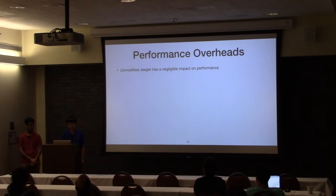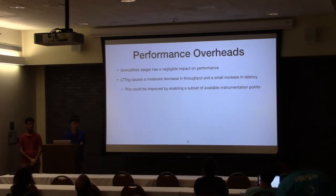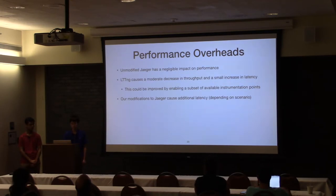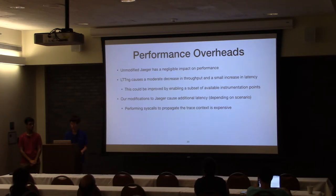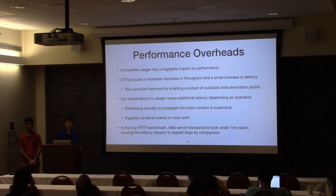So we discussed our performance overhead. Unmodified Jaeger is negligible. LTTNG decreases throughput and increases latency since it's recording all of that data. We could improve this by only enabling some of the instrumentation points — for these benchmarks we enabled everything: all syscalls, all events. Our modifications to Jaeger cause additional latency depending on the benchmark, since each Jaeger library is written differently. Performing syscalls is quite expensive, even when you're only doing it for every 1,000 requests. LTTNG and our adapter ingesting the kernel events also perform more work, so that performance degradation is expected. Note about the tiny HTTP benchmark: each transaction is less than a millisecond, so the latency impact appeared extremely large even though it wasn't that bad.